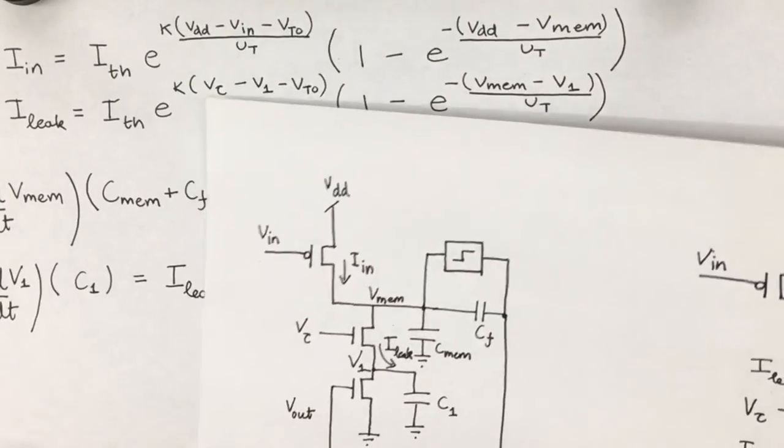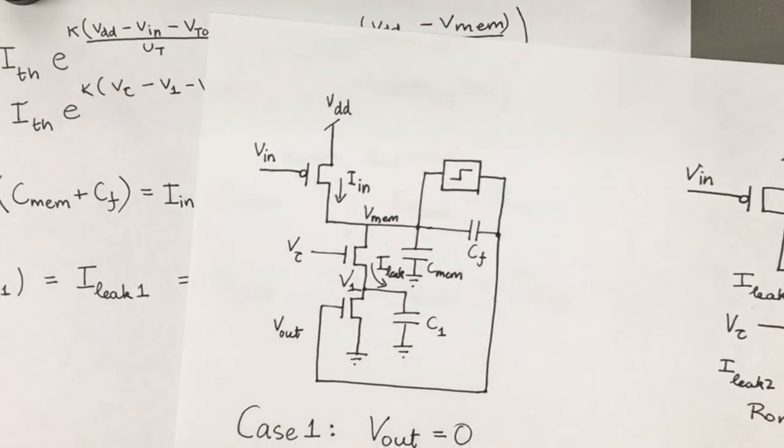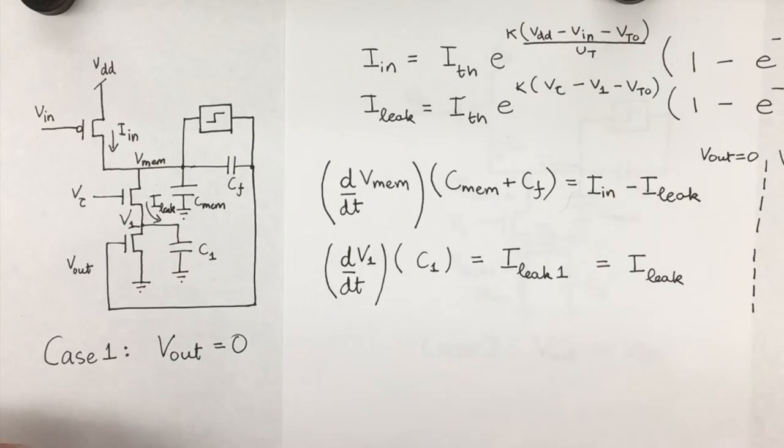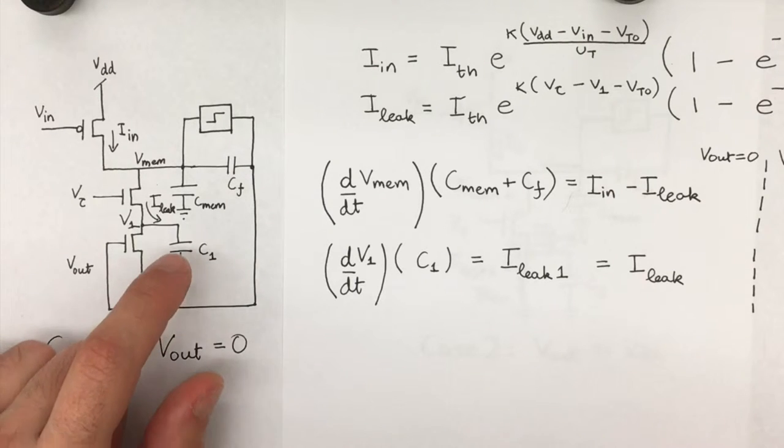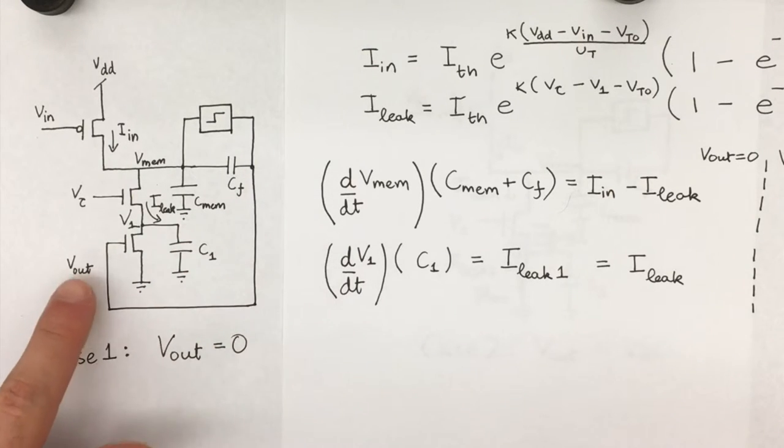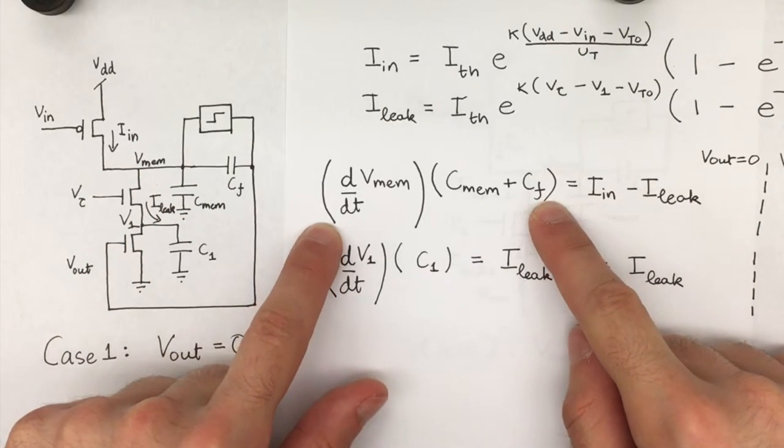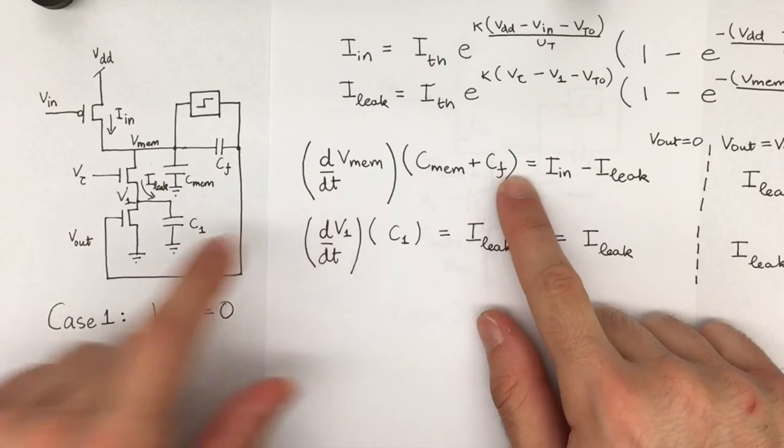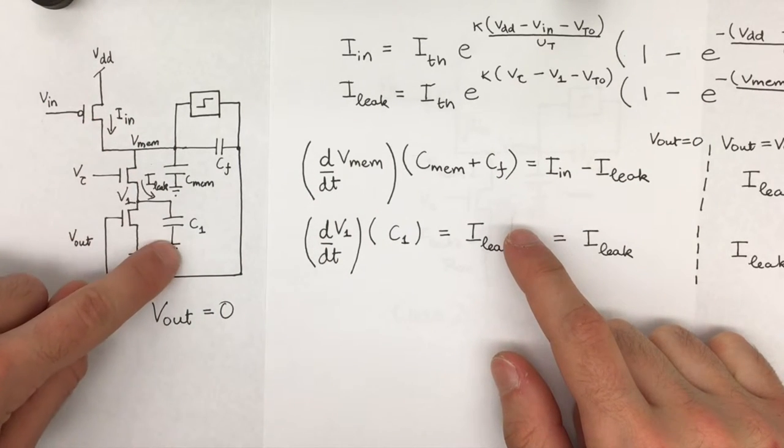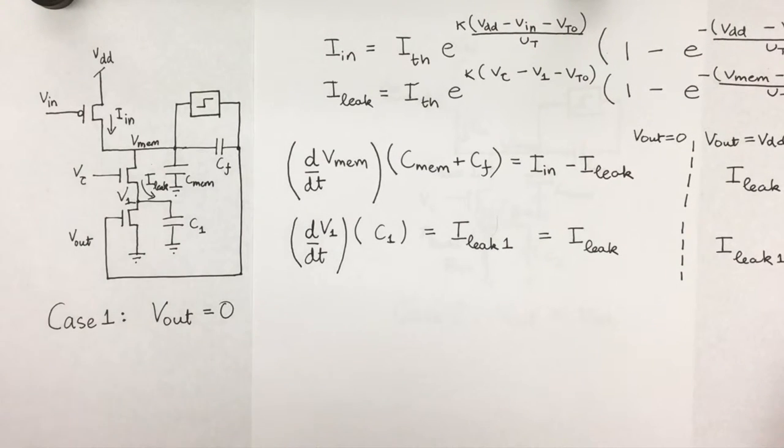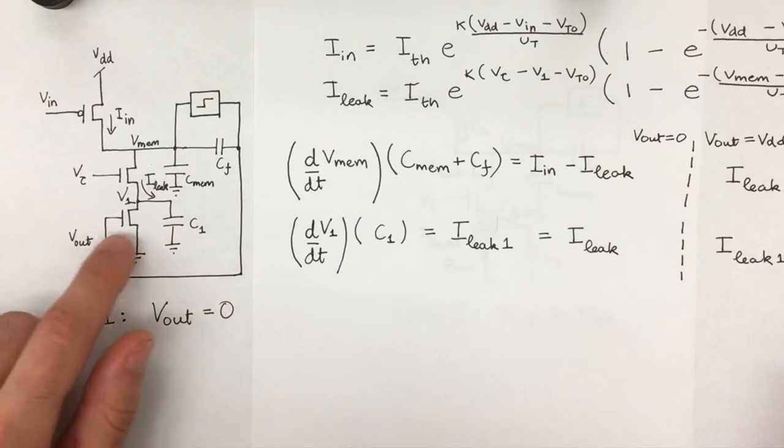Now we'll go into the equations for case one, in which Vmem is zero and charge is being built up on Vmem. Here, Cmem and Cf are effectively grounded together, so they act in parallel and become effectively a single capacitor. The current going through this branch is equal to the input minus the leakage current going through capacitor one. The leakage current is equal to all of the current going through this capacitor one because this MOSFET is off.